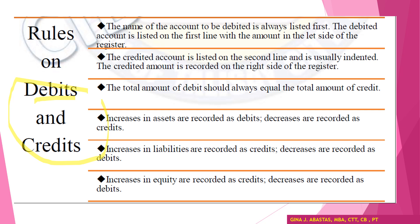So debits are DR and credits are CR. When to debit and when to credit: an increase in an asset account is called a debit, and an increase in a liability or equity account is called a credit. If we decrease an asset account, we credit that account. And if we decrease a liability or equity account, we debit those accounts.